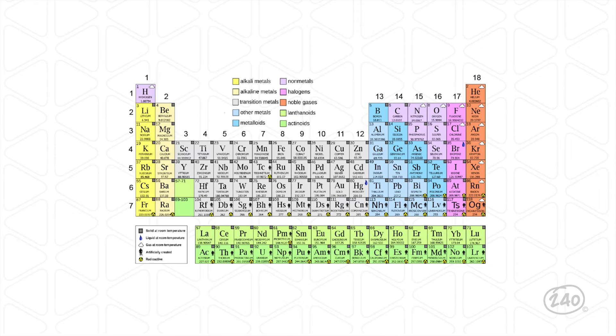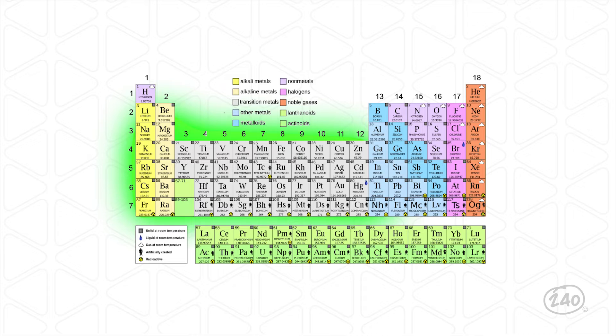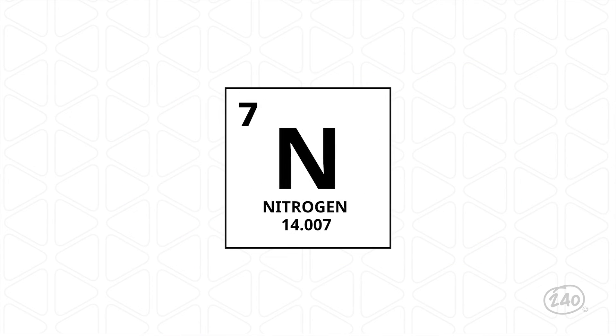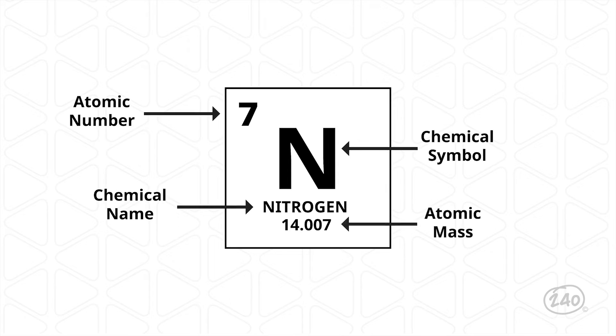Let's keep cruising to chemistry. The big thing here is the organization of the periodic table, so you'll want to know where to find different kinds of elements — like how the metals are on the left and the non-metals are on the right. You'll also need to be able to break down all the information found in each element square on the periodic table, like how the atomic number — which for nitrogen is 7 — indicates that a nitrogen atom has seven protons.